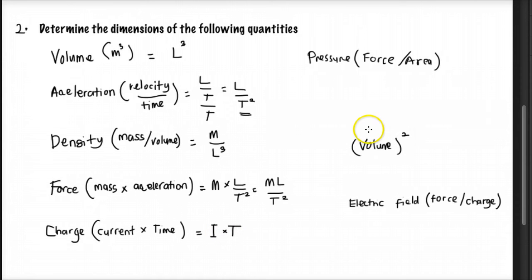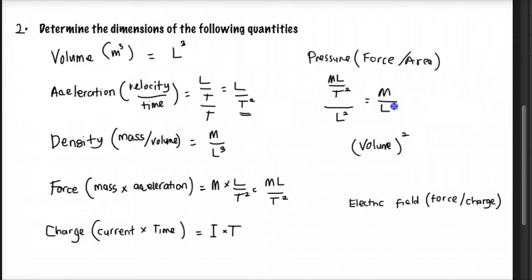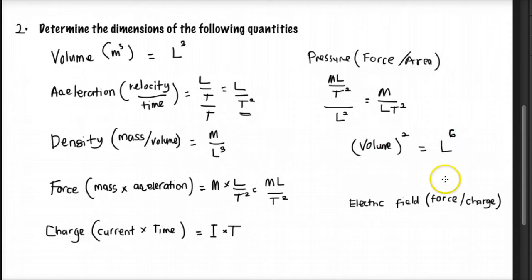Next is pressure, which is force over area. Force is ML over T², and area is L². So pressure becomes ML over T² divided by L², giving M over LT². The next is the square of volume. Volume is L³, so volume squared is L³ times 2, which equals L⁶.